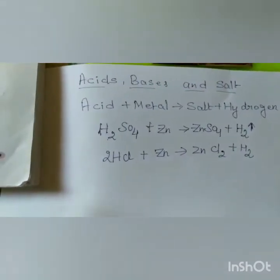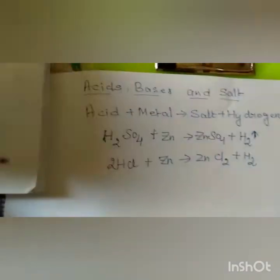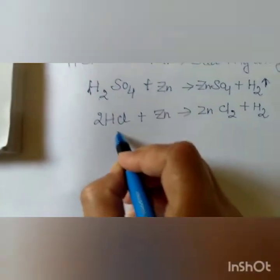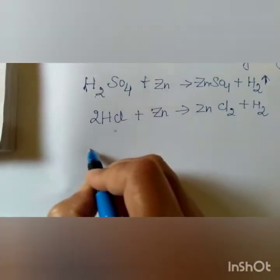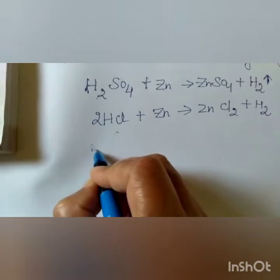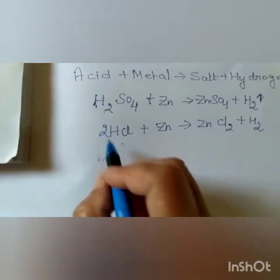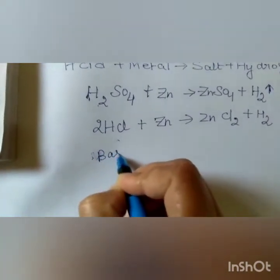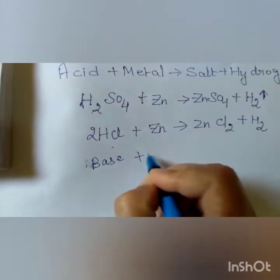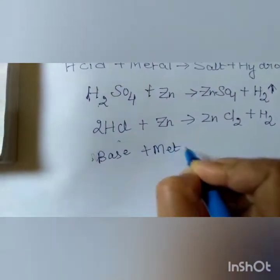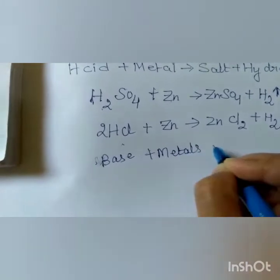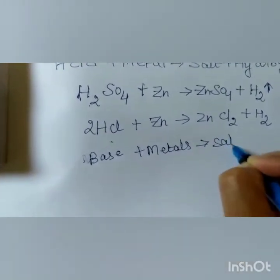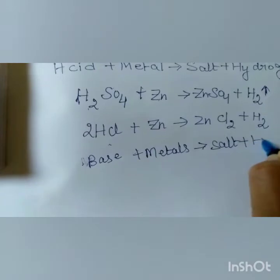This was the action of acid with metal. Now we will see the action of base with metal. Base also reacts with metals to give salt plus hydrogen.